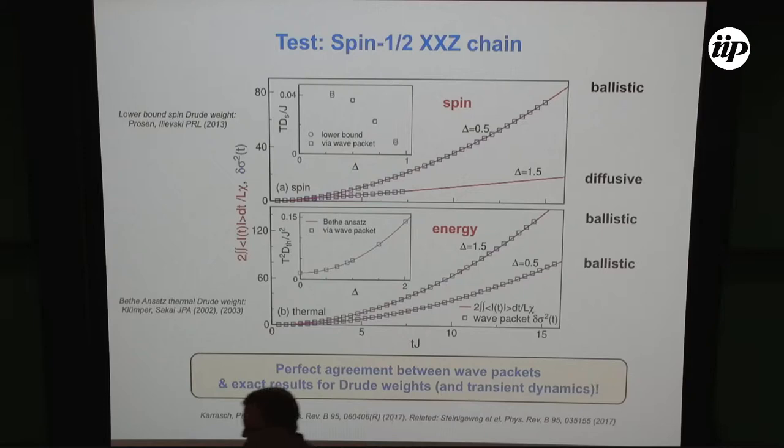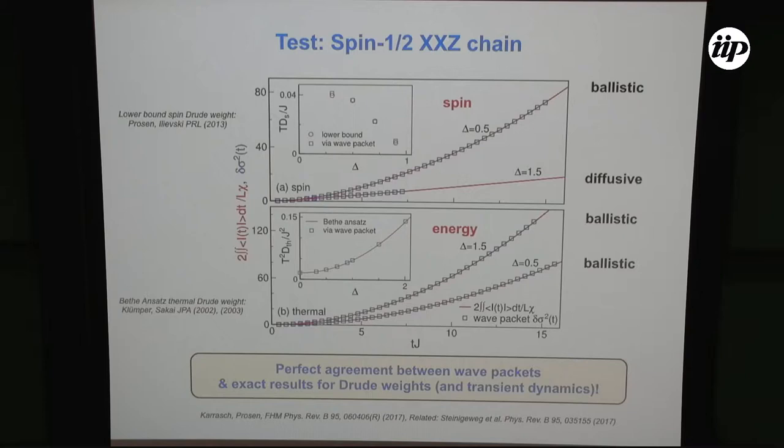In solid-state systems there are phonons and impurities, so even with beautiful quantum magnets where thermodynamics is well described, it's essentially impossible to induce thermal transport without the phonons playing a role. That is why we thought we should turn to the Fermi-Hubbard model instead.